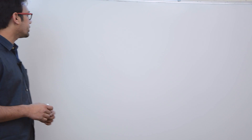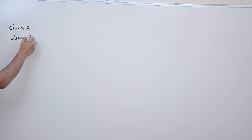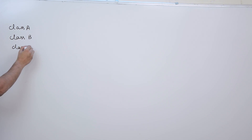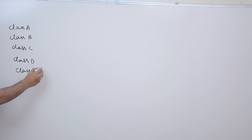We were discussing about the classful IP addressing. There are 5 classes: we have class A, class B, class C, class D, and class E.